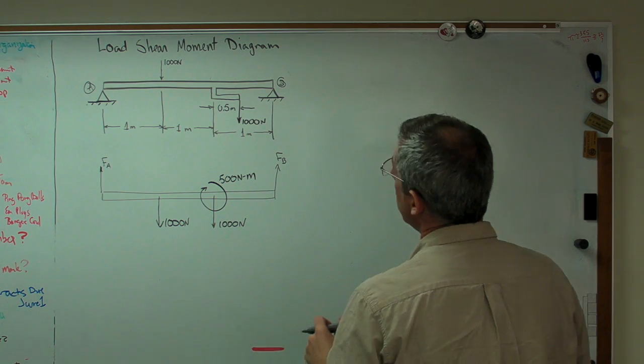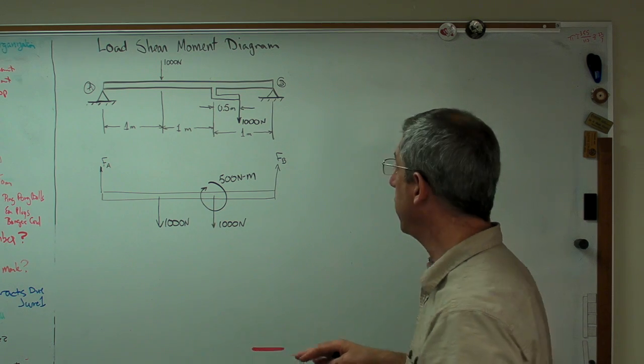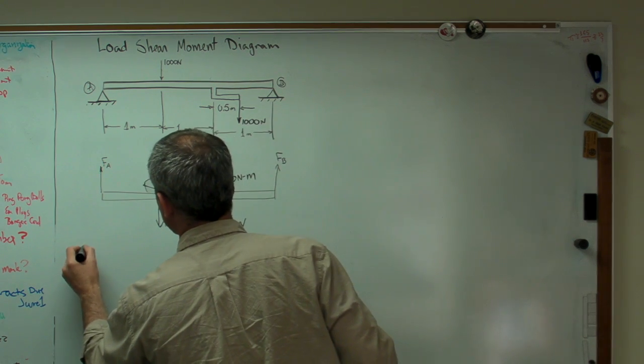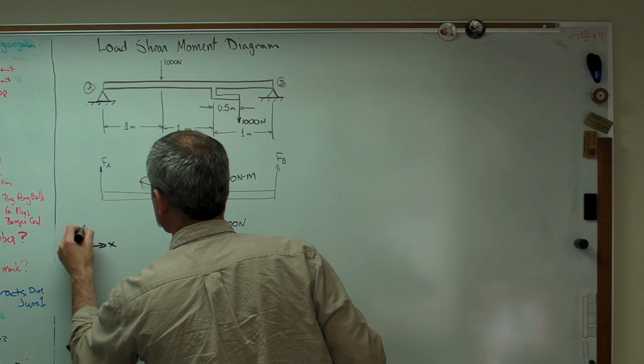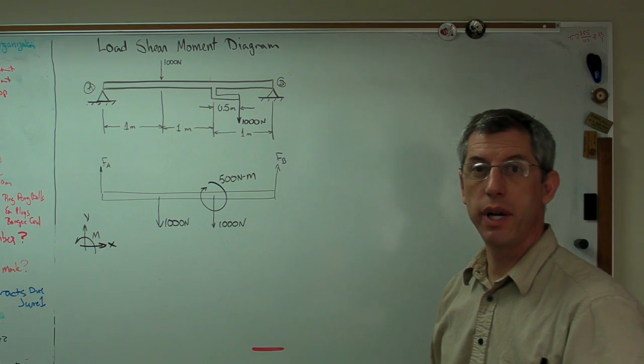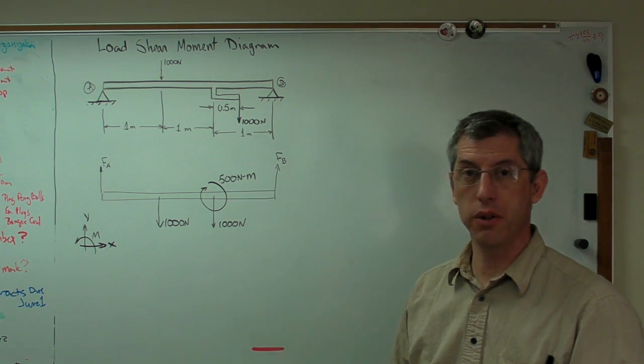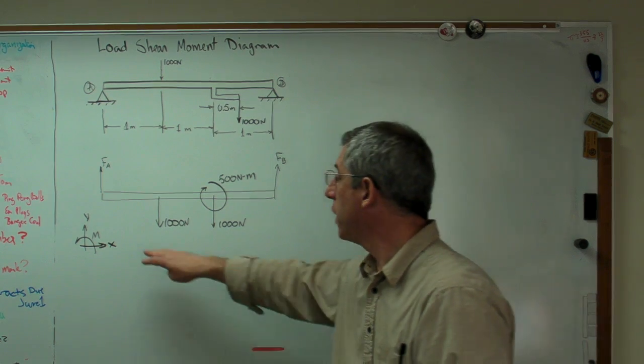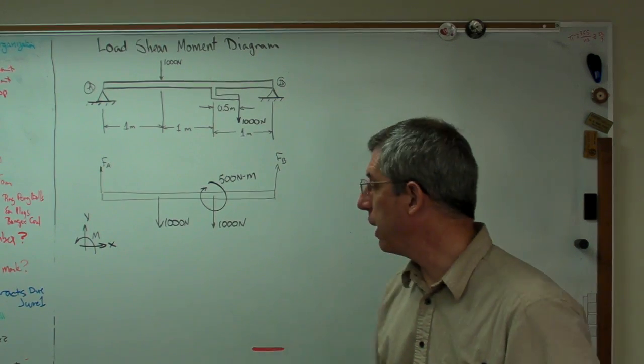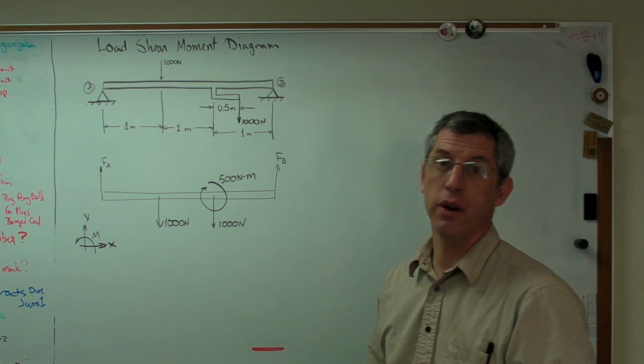Now, in order to do this, I have to define a positive sign convention. So my sign convention is going to be this. I'm always going to assume that's positive. That's going to work until we get to the moment part of the load shear moment diagram, and then we're going to have to make a slight change. So the first thing we need to know is what FA and FB are.